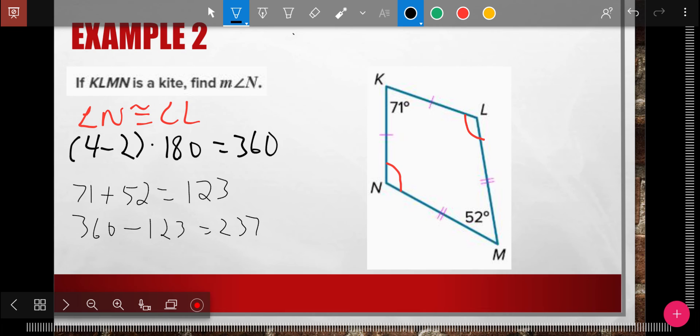And so then I do 360 minus 123, and I get 237. So 237 degrees left, and these two angles are the same. So take your 237 and divide it by 2. And so each angle is 118.5. And so N and L, or in this case, it's asking for N. The measure of angle N is 118.5.